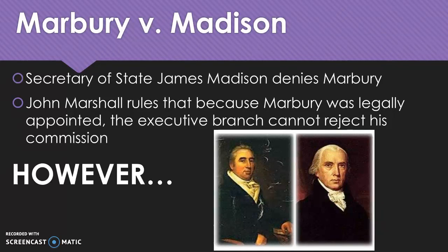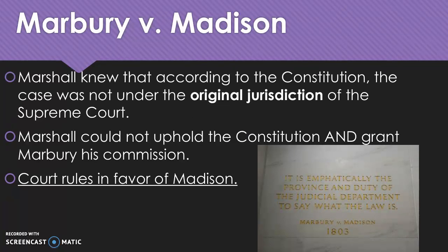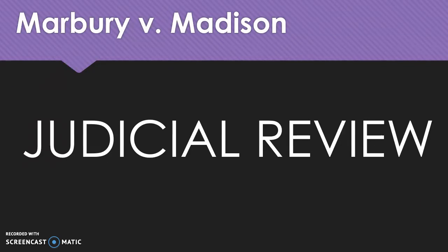They bring the case to the Supreme Court, and John Marshall rules that Marbury was actually legally appointed by John Adams and that the executive branch cannot tell him otherwise. However, John Marshall understands the Constitution and recognizes that the problem with this case is that it did not fall under the jurisdiction or responsibility of the Supreme Court. So John Marshall says that according to the Constitution, it is not the role of the Supreme Court to determine whether Marbury should have that position. He cannot legally grant Marbury his commission, and the court rules in favor of Madison. This illustrates restraint on the part of John Marshall — he's given the opportunity to weigh in on a case that technically does not qualify as a federal case, and he rejects it, saying it doesn't fall under his jurisdiction.